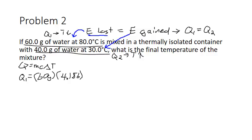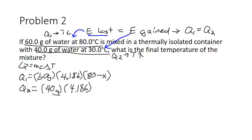For q1: 60 grams times the specific heat of water. The change in temperature is tricky because we don't know the final temperature — call it x. The 80-degree water is losing energy, so its ΔT is (80 − x). For q2: 40 grams times the same specific heat of water. The 40-gram water is gaining energy, so its ΔT is (x − 30).